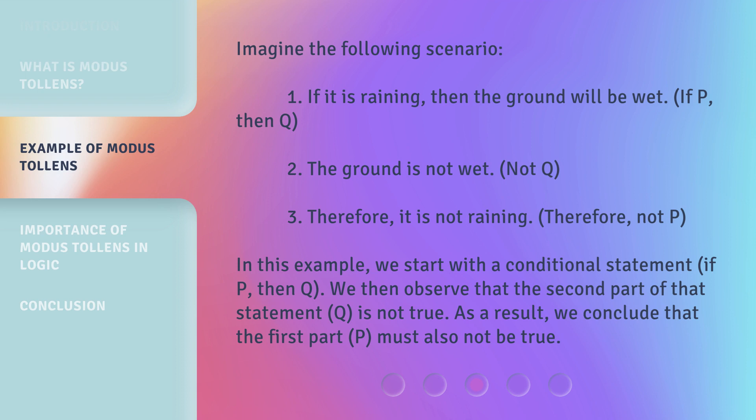In this example, we start with a conditional statement: if P, then Q. We then observe that the second part of that statement, Q, is not true. As a result, we conclude that the first part, P, must also not be true.